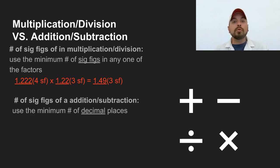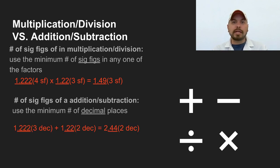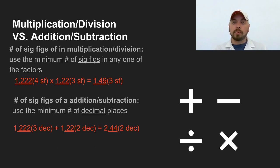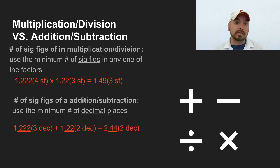When it comes to addition and subtraction, it's actually much easier — you find the number that has the fewest number of decimal places. So if I take 1.222 and add it to 1.22, our answer is reported with two decimal places because 1.22 has two decimal places. So our answer is 2.44, which is three total sig figs. But for addition and subtraction, we care mostly about the number of decimal places, not the total sig fig count.